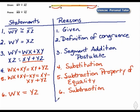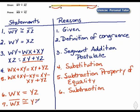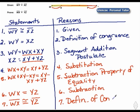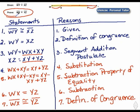We're almost there — one more statement. Since we have the length of W-X equal to the length of Y-Z, that means segment W-X is congruent to segment Y-Z, again by the definition of congruence. So we did prove that segment W-X is congruent to segment Y-Z.